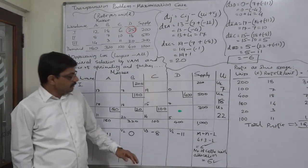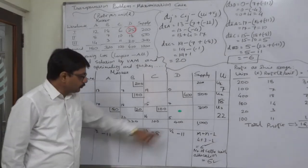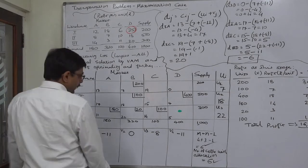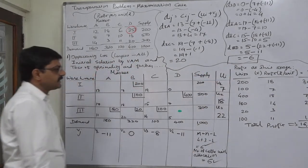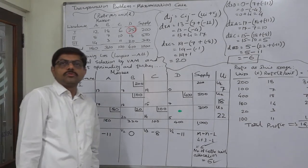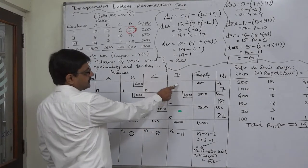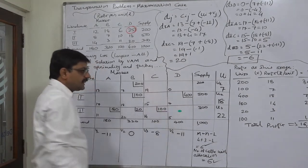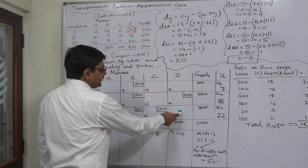Since this is a non-optimal solution, we have to move forward for optimality. We select the cell with the negative D value as the starting point of a closed loop. The rules for the closed loop: we start from the cell with the negative Dij value and can move in any direction — upper, lower, left, right — but to take a turn at the next stage, it must be an occupied cell. We must reach occupied cells in sequence and ultimately return to the starting cell.